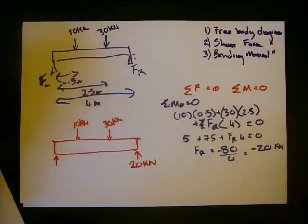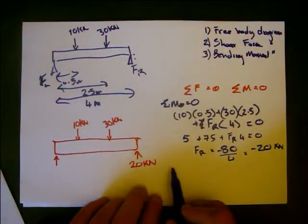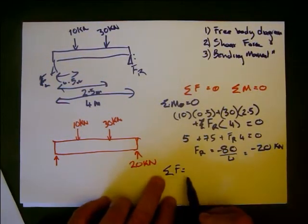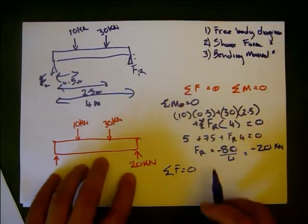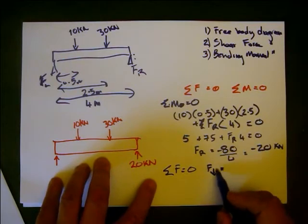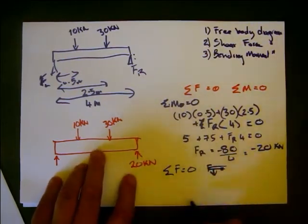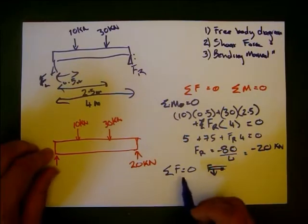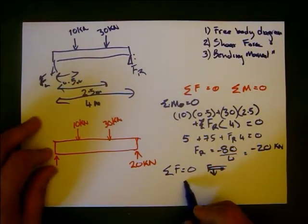And to find the other support force, we can use sum of forces equals zero. So we know the forces down are 10 and 30.